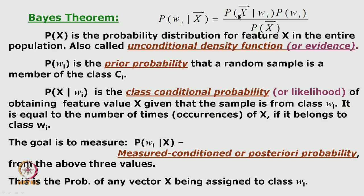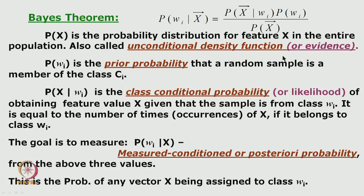To summarize the Bayes theorem: in the numerator you have the class conditional likelihood multiplied by the class prior; the denominator is the unconditional probability. Using these three you compute the Bayes posterior. Now, assuming you know this formula, let us go back to the discussion on decision boundaries and decision regions under the Bayes paradigm.